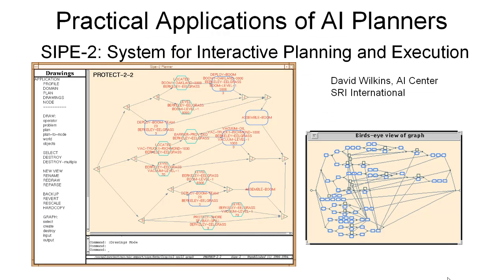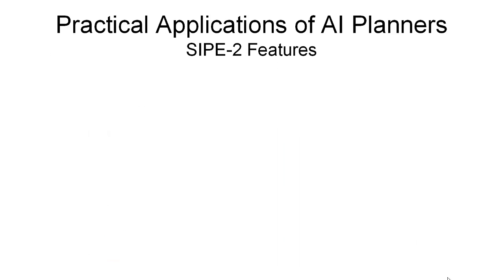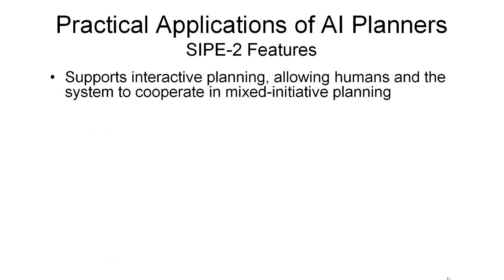SIP2, a system for interactive planning and execution, was created in the 1980s and has been developed since then to provide a comprehensive approach to AI planning. It's been developed by David Wilkins and his colleagues at SRI International in California. SIP2 is a domain independent planner which supports interactive planning, allowing humans and the system to cooperate in a mixed initiative planning fashion.